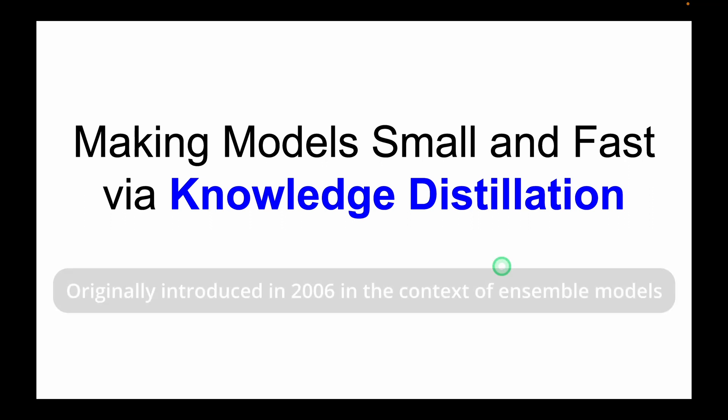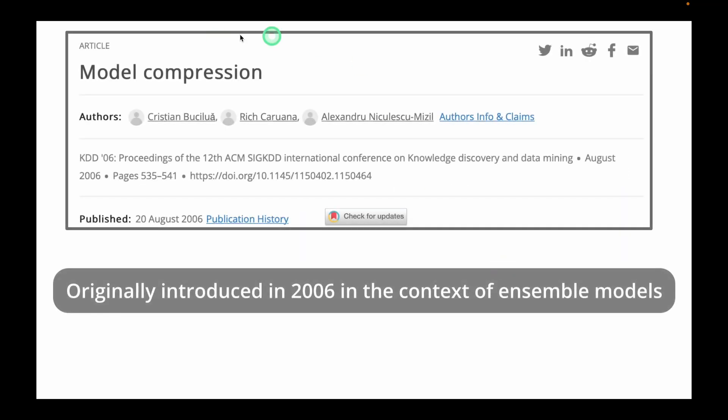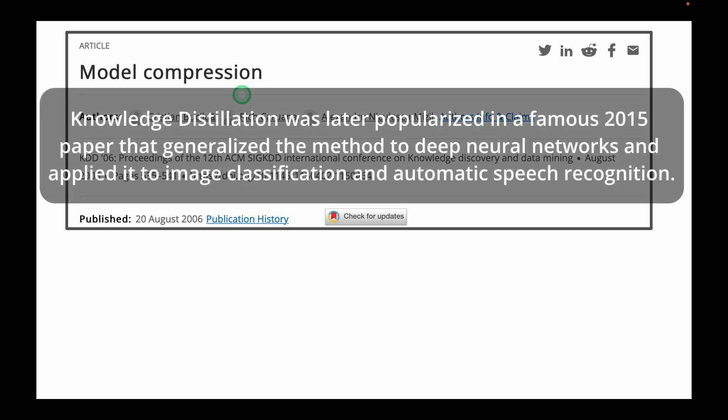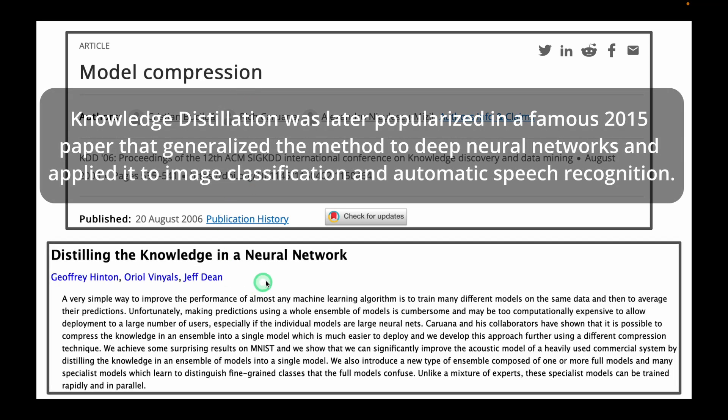This Knowledge Distillation technique was originally introduced in this 2006 paper called Model Compression in the context of ensemble models. But this term, Knowledge Distillation, was later popularized in a famous 2015 paper called Distilling Knowledge in Neural Networks that generalized the method to deep neural networks and applied it to image classification and automatic speech recognition or ASR.